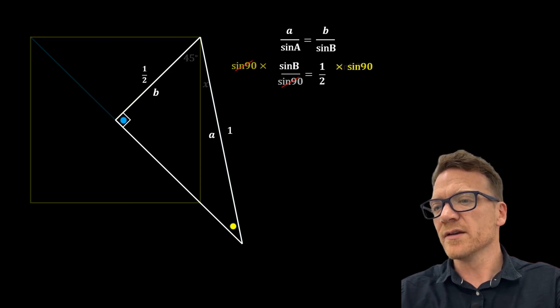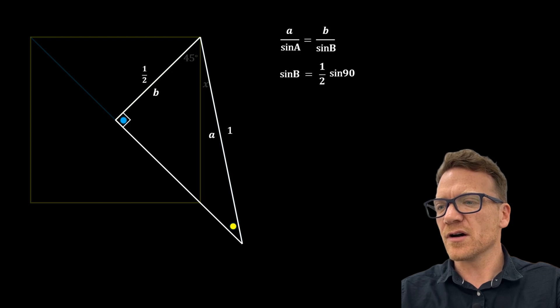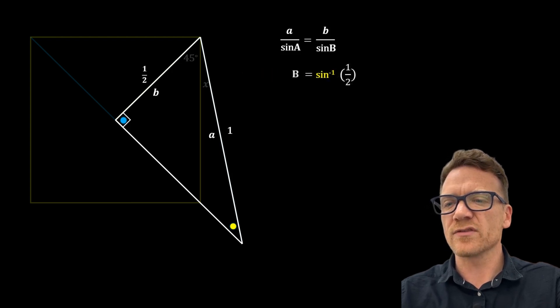Sine 90 is equal to 1, so sine B is equal to a half. Now we can use the inverse function of sine to find angle B which is 30 degrees.